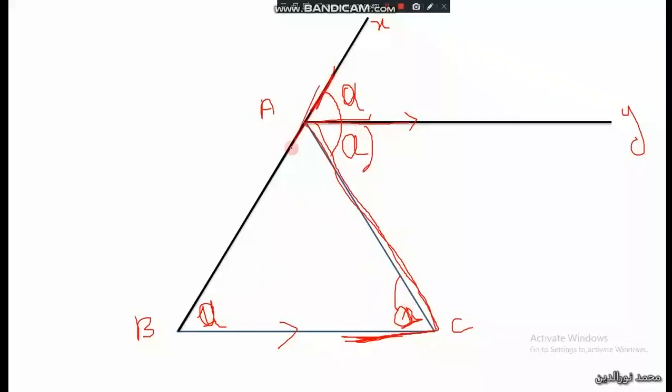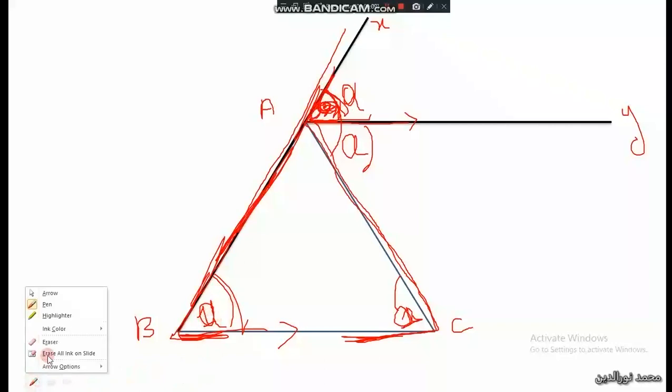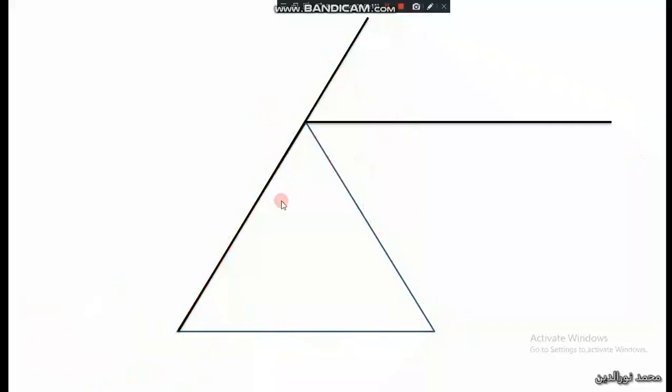Or I can work with corresponding angles. Let's look at this side, like this. So I have right up this angle and right up this angle. So we observe that they are corresponding and they are equal. So when two corresponding angles are equal, then the two lines are parallel.